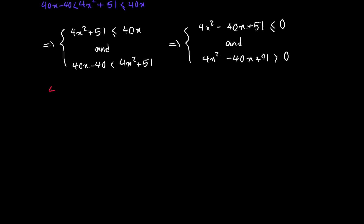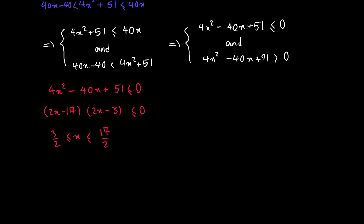The first inequality is 4x squared minus 40x plus 51 ≤ 0. Fortunately the left-hand side is factorable, so I can factor it as (2x minus 17)(2x minus 3), and therefore x lies between 3 halves and 17 halves.